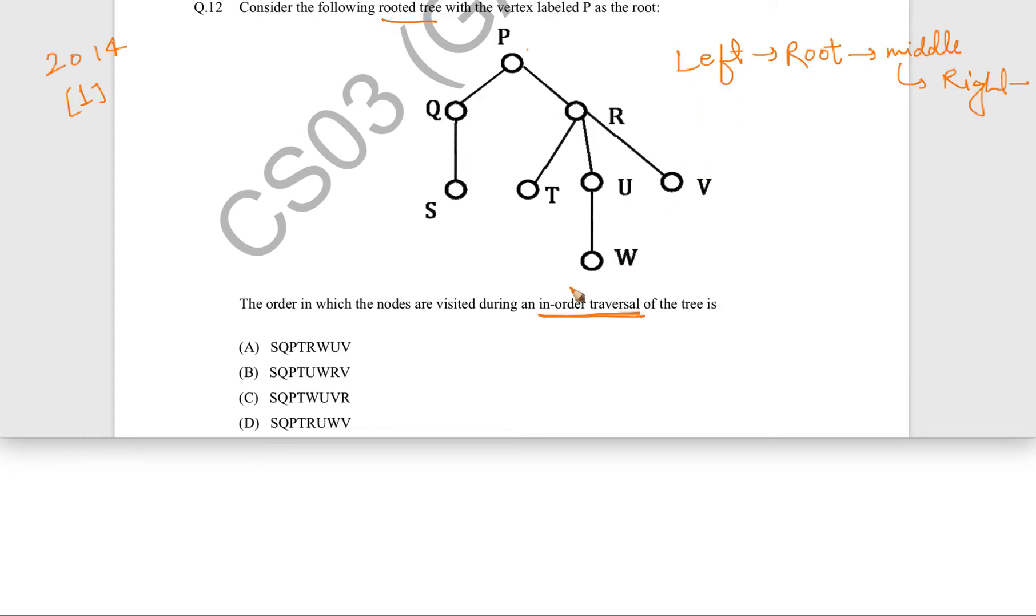That is the definition of in-order traversal on a ternary tree, a tree which can have at most three children, which is the case in this case.